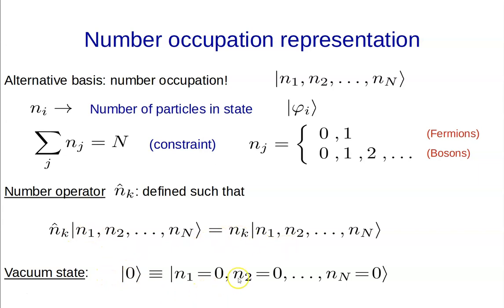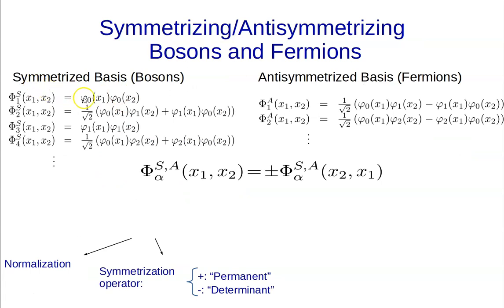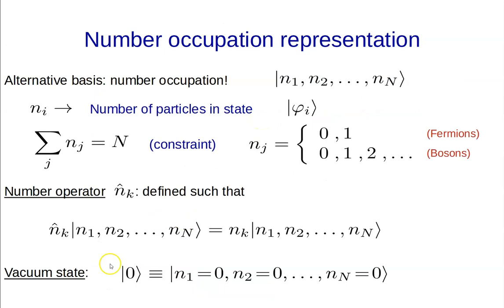One important difference from the first-quantization basis is that here we can define a vacuum state — a state where no single-particle states are occupied at all. In the first-quantization picture this is simply not well defined; you already start with particles occupying states. Here we can formally describe a system where there are no particles — that's the vacuum.